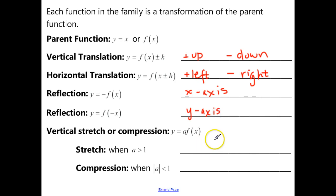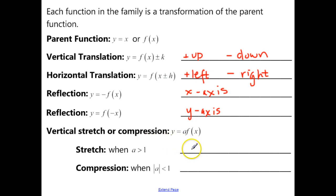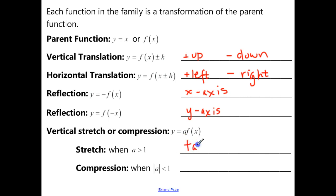For a vertical stretch or compression, we're going to be looking at the number 'a' outside of the function. When a is greater than 1, this is going to be a vertical stretch. When the absolute value of a is less than 1, it's going to be a compression — the graph gets taller for a stretch and shorter for a compression.